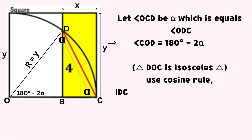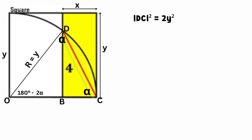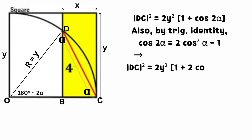Using the cosine rule, we obtain an equation for the square of line DC as shown on the screen. By trigonometric identity, cosine of (180 degrees minus 2 times alpha) equals negative cosine of 2 times alpha. Applying the further trigonometric identity, cosine 2 alpha equals 2 cosine squared alpha minus 1.